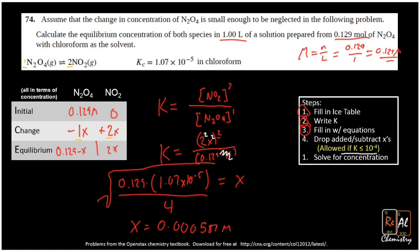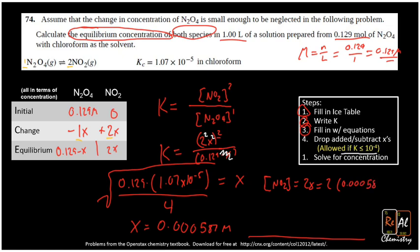Now, remember the question asks for the equilibrium concentration of both species. So a lot of people just leave the answer here thinking they've solved the problem. And true, they have found x. And very often in math class, that's the end. But in chemistry, we want this value to pertain to something in the laboratory, right? And so that's the concentrations. So let's find the concentration of NO2. We know that's equal to 2x. So that's equal to 2 times 0.000587. So our concentration for NO2 is equal to 0.00117 molar. Cool.